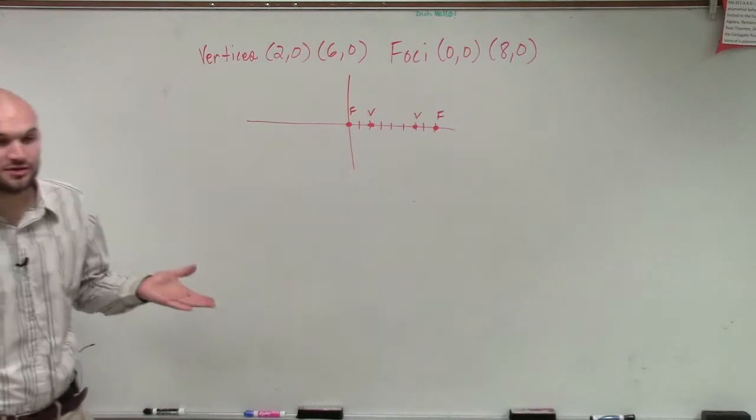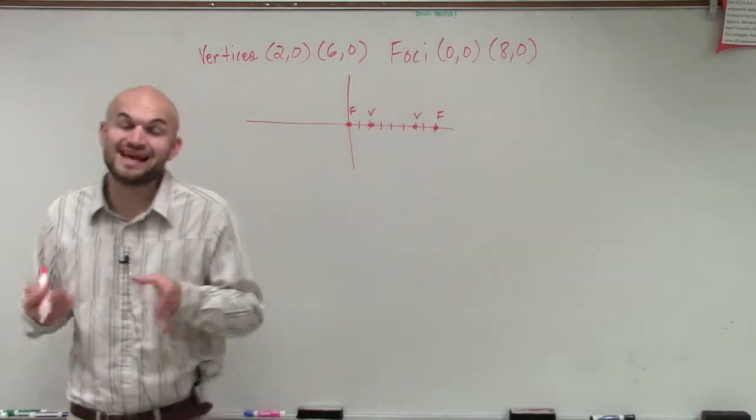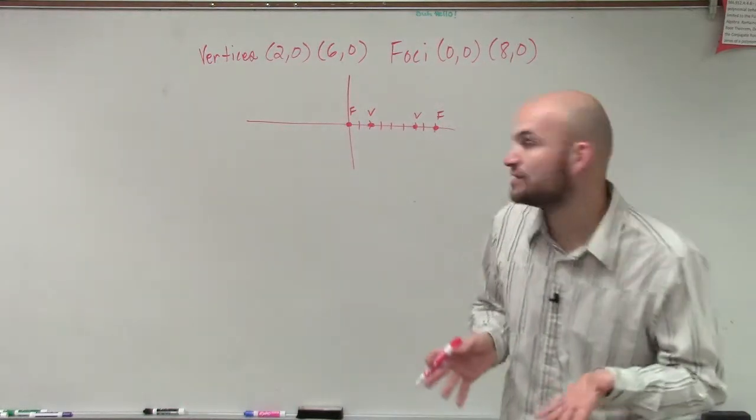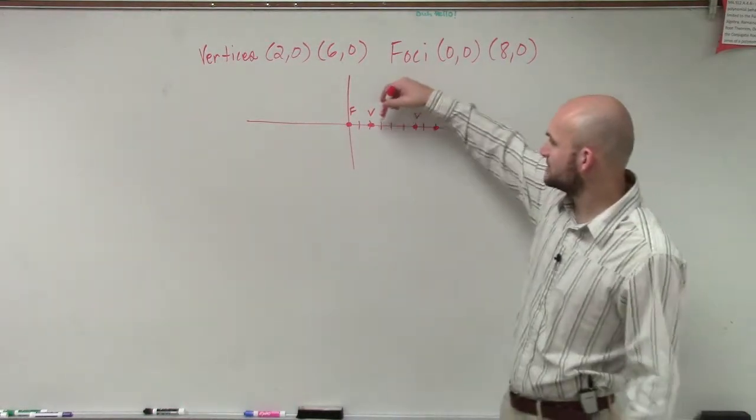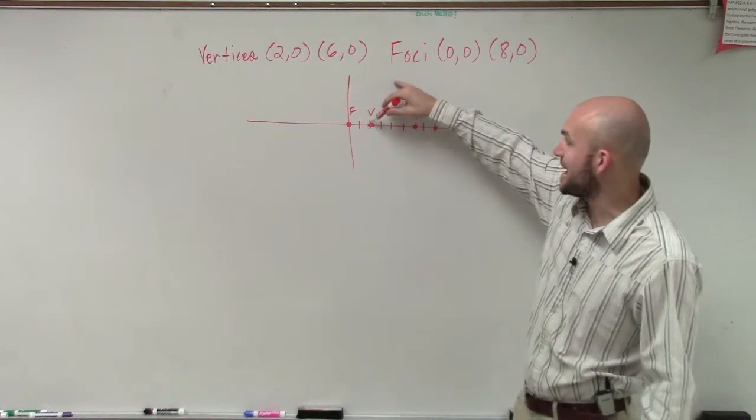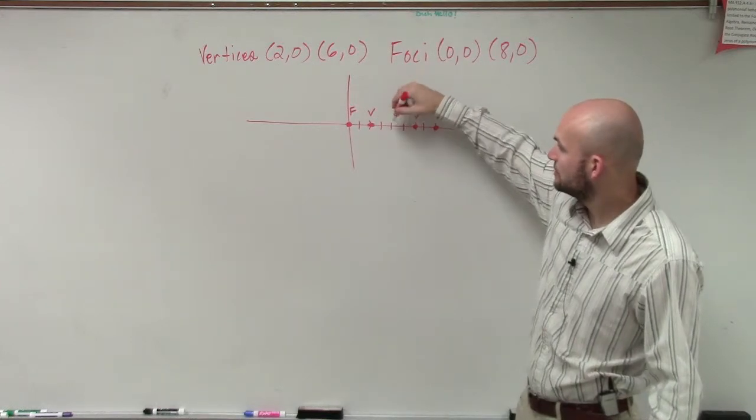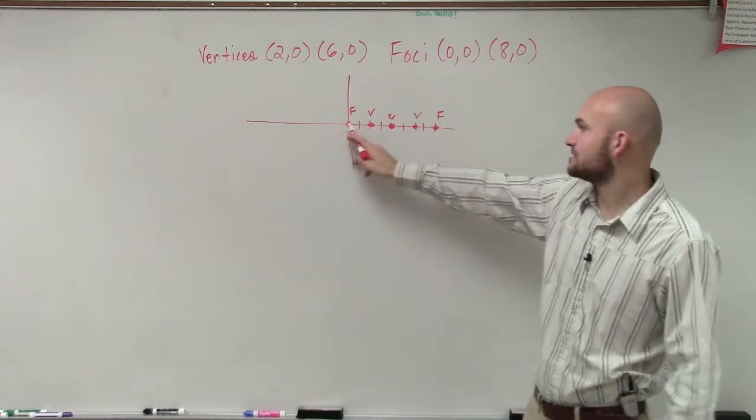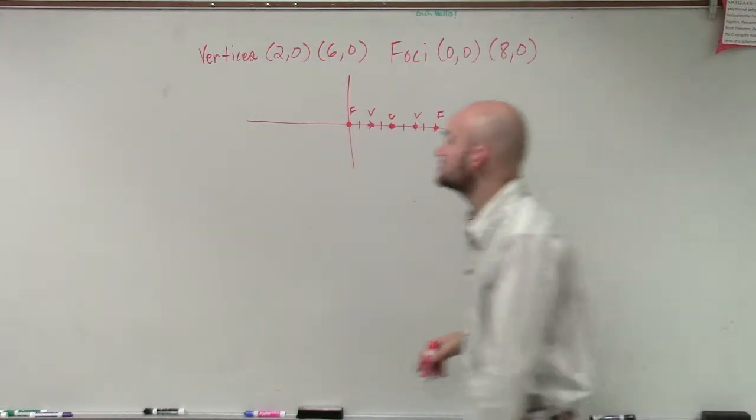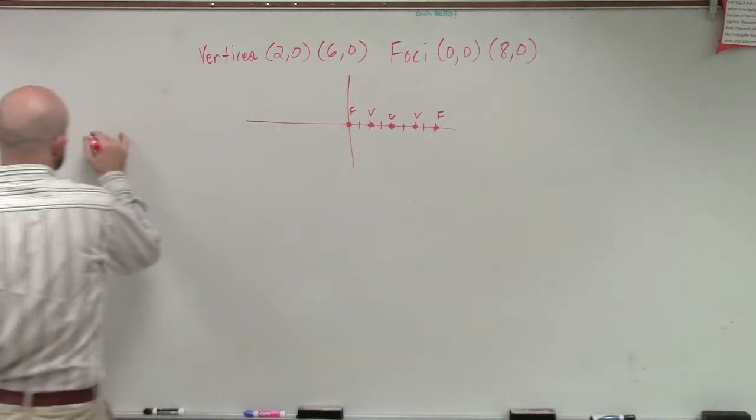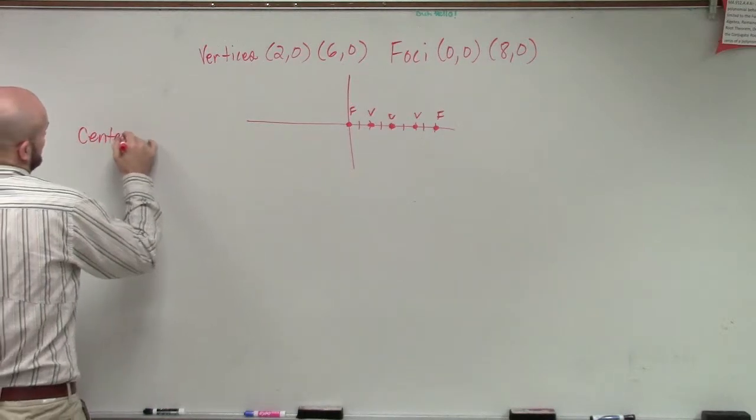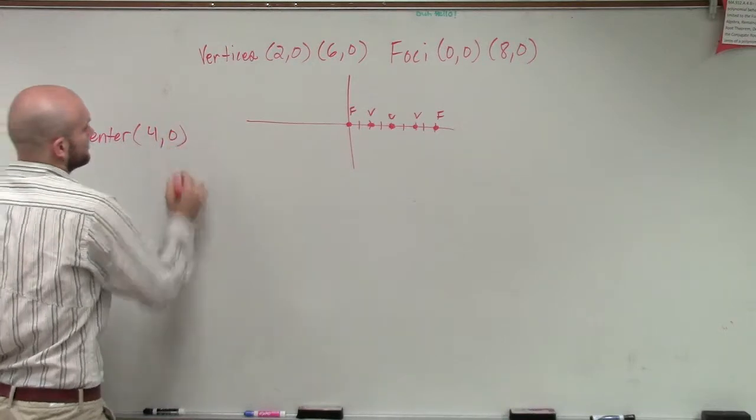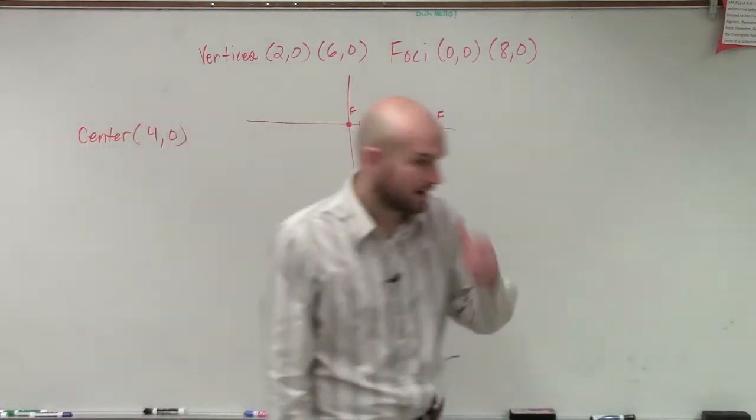So now what we need to do is we also need to determine the center. Remember the center is going to be halfway between your two foci and your two vertices. The center, we can obviously say halfway between these two vertices would be at this point right here, and that's also halfway between your two foci. So we can easily just determine that our center is going to be at the point 4 comma 0.